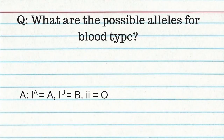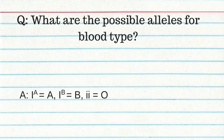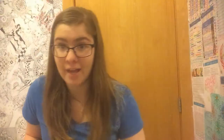The possible alleles for blood type are A, B, or O. The possible blood types (phenotypes): type A is genotype AA or AO; type B is BB or BO; type AB is AB; and type O is OO.